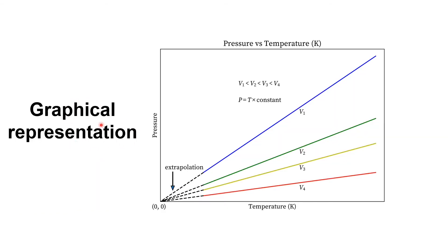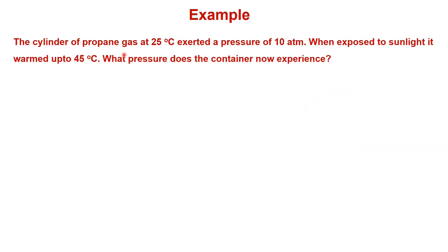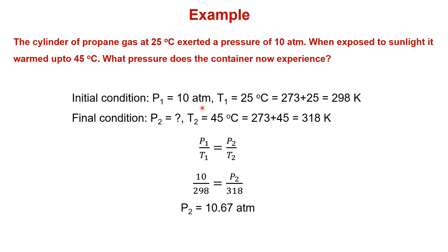This is the graphical representation of Gay-Lussac's Law. The graph is plotted between pressure and temperature in Kelvin, showing a linear slope. At lesser volume the graph would be higher, and for higher volume the graph would be lower. Extrapolating the graph, at 0 Kelvin the pressure would also be 0. Example: a cylinder of propane at 25°C exerted a pressure of 10 atmosphere. When warmed to 45°C in sunlight — that is, T1 = 298 K, T2 = 318 K — using P1/T1 = P2/T2, we calculate P2 as 10.67 atmosphere.